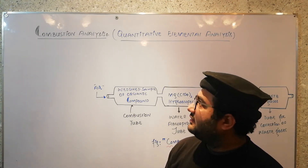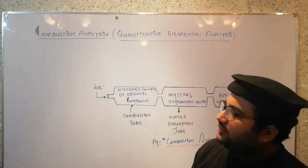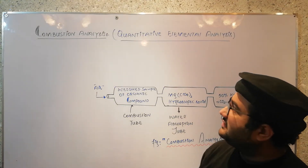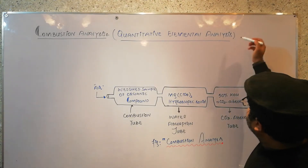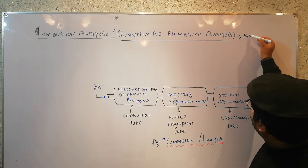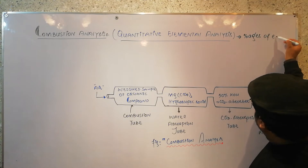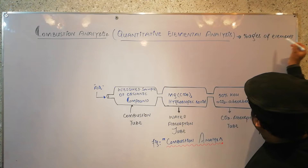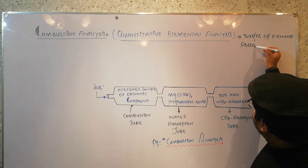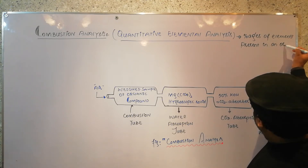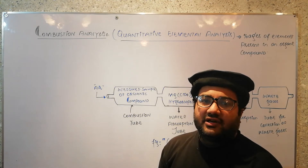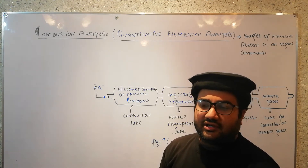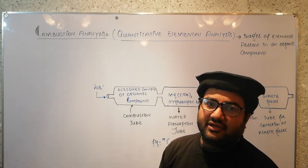Welcome everyone to our next class on elemental analysis. Today the topic is combustion analysis, which is a type of quantitative elemental analysis. Quantitative elemental analysis means we will determine the percentages of elements present in an organic compound. In quantitative analysis we determine the percentages of the elements which are present in a compound.